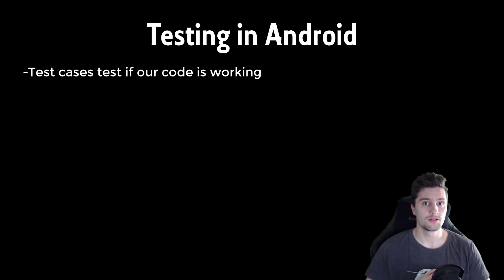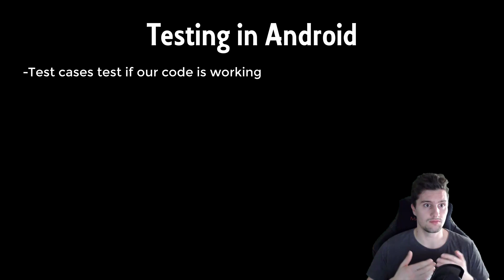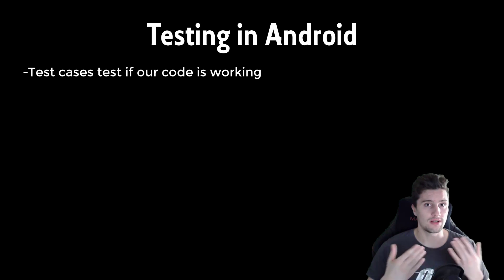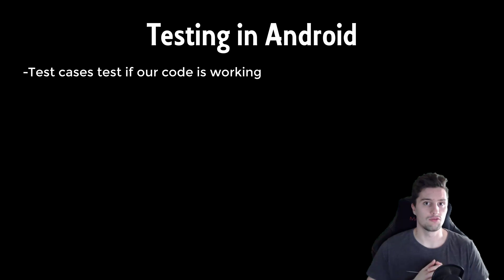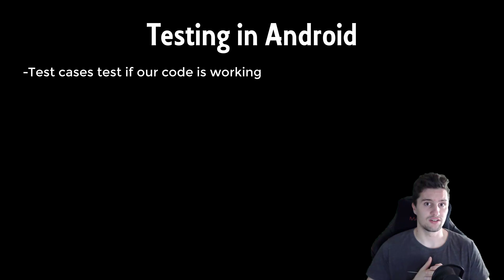I used to do that for a long time too, and the big problem is that it only detects errors once. Whenever you want to check for errors, you need to open your app and click around, which takes a huge amount of time. Usually if something was working, you tested it once and didn't touch it afterwards. So what happens if you extend your app and something breaks in previously working code?